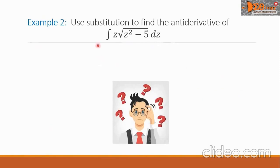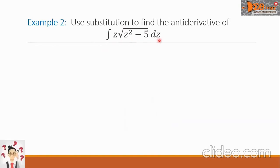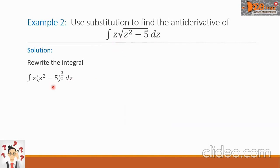Example 2: Use substitution to find the anti-derivative of the integral of z times the square root of the quantity z squared minus 5, dz. For our solution, let us rewrite the integral showing that the radical is in the form of a fractional exponent. So we have the integral of z times the quantity z squared minus 5, raised to 1/2, then dz.